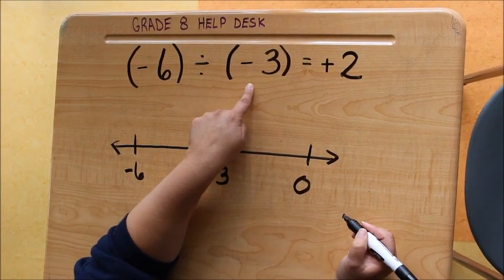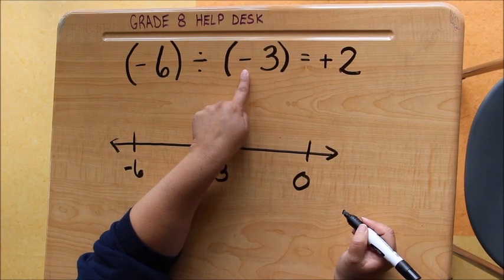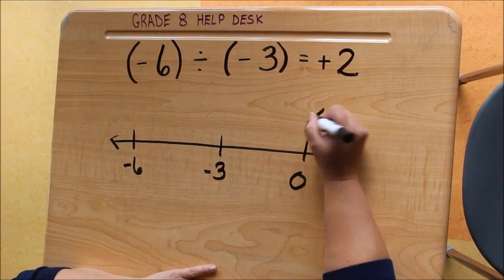Our divisor also tells us if we're going to jump forwards or if we're going to jump backwards. In this case, because our divisor is negative, we're going to jump backwards.